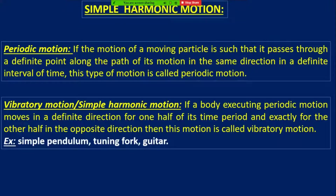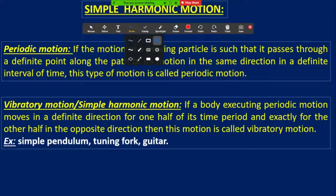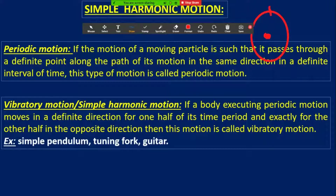The main parameter or main concern is the definite interval of time, otherwise this motion should never be called periodic motion — it should be called circular motion. For example, suppose you start to move along a circular path. You start from a point, and after covering the total path you have reached here in two minutes. This two minutes is called your time interval, that is your time period.